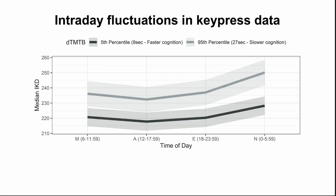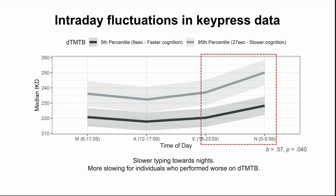Here I am showing the intraday fluctuations in keypress data. On the x-axis is time of day, and on the y-axis is typing speed — the higher you go, the slower the typing speed. The lighter shade of gray represents individuals who did worse on the digital trail making test, and the darker shade represents those who did better. Both curves show concave-up U-shaped patterns, indicating that everyone typed faster in the afternoons and evenings, and their typing speed slowed down going into the night. This is consistent with literature suggesting a sundowning effect, where processing speed slows toward the end of the day. Individuals who performed worse on the digital trail making test also slowed down significantly more in typing speed as they went into the night, suggesting a more dramatic sundowning effect.